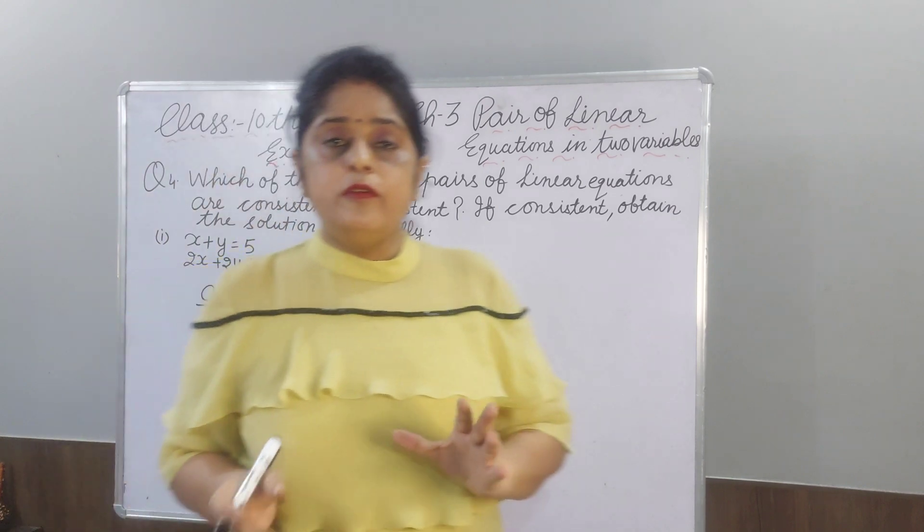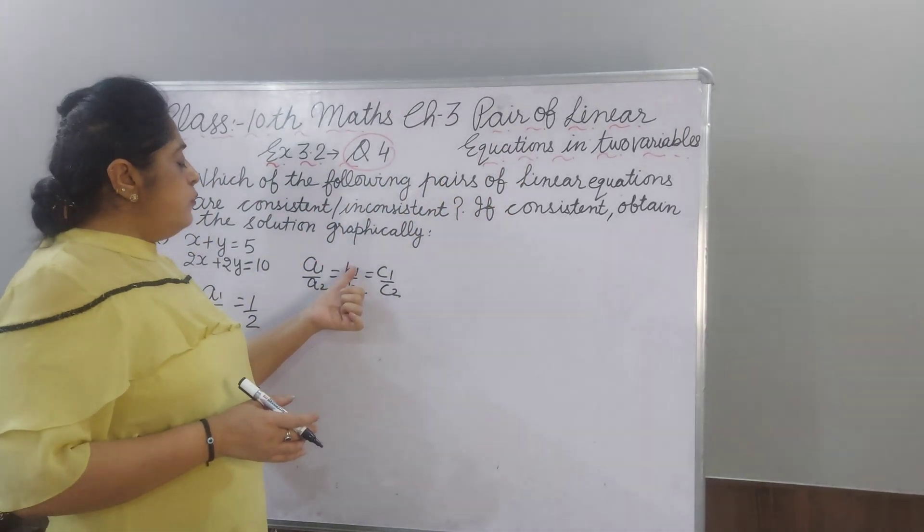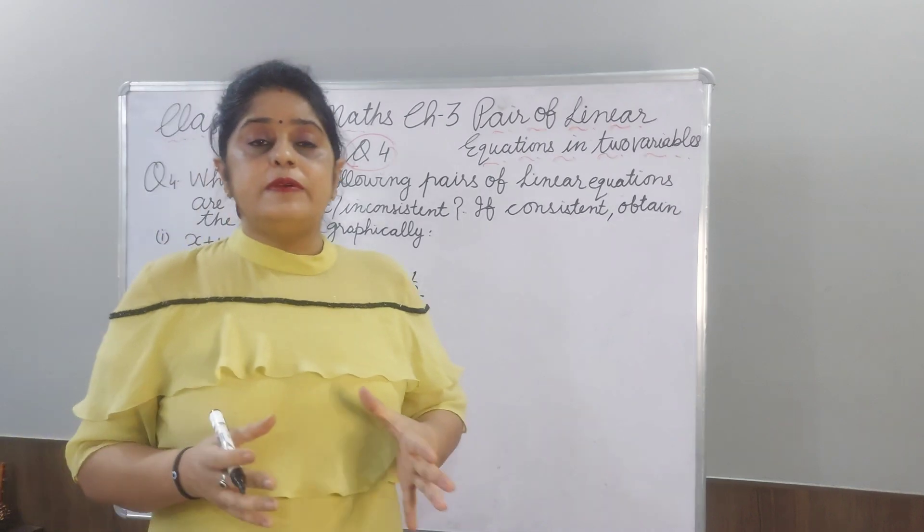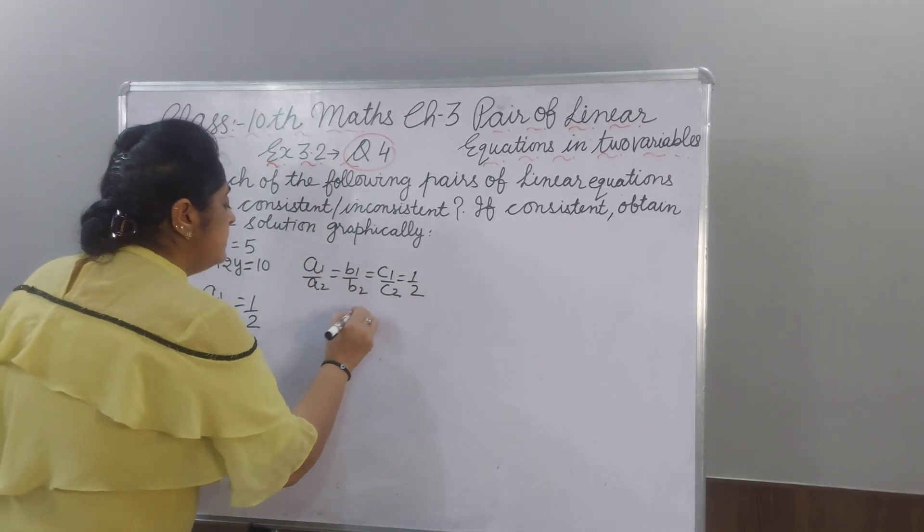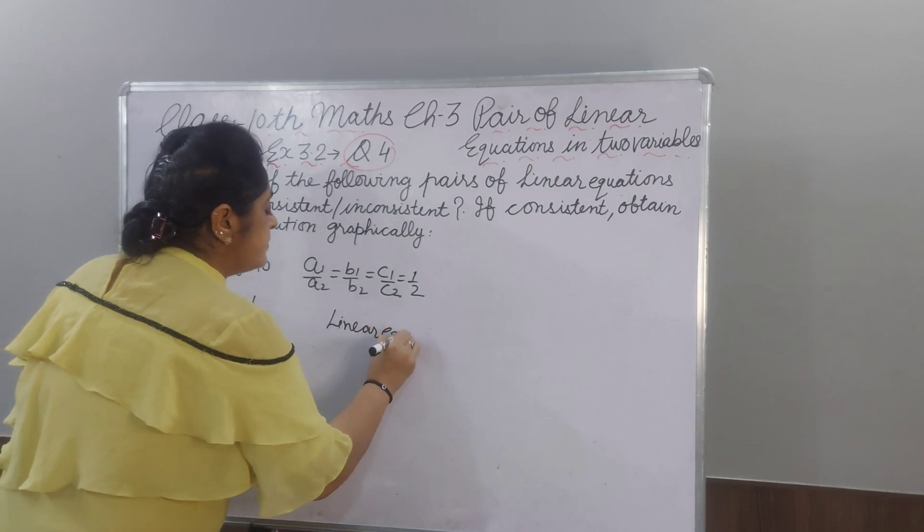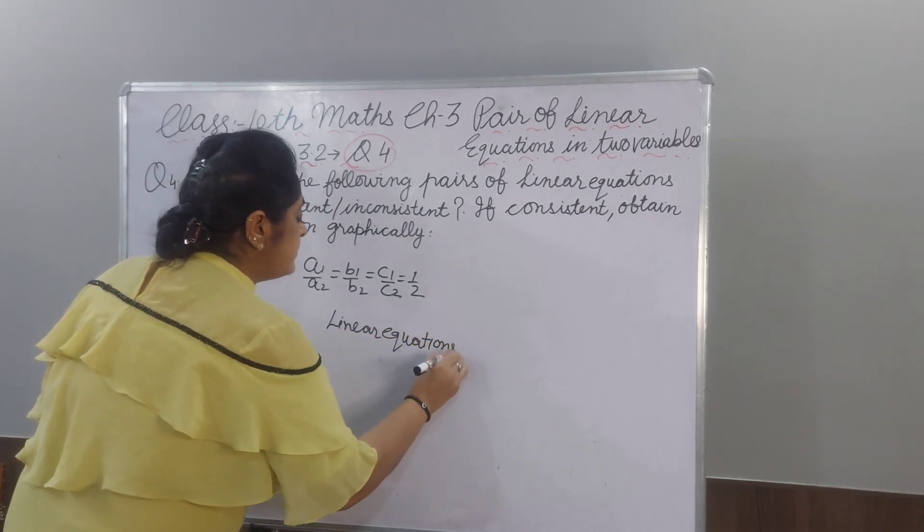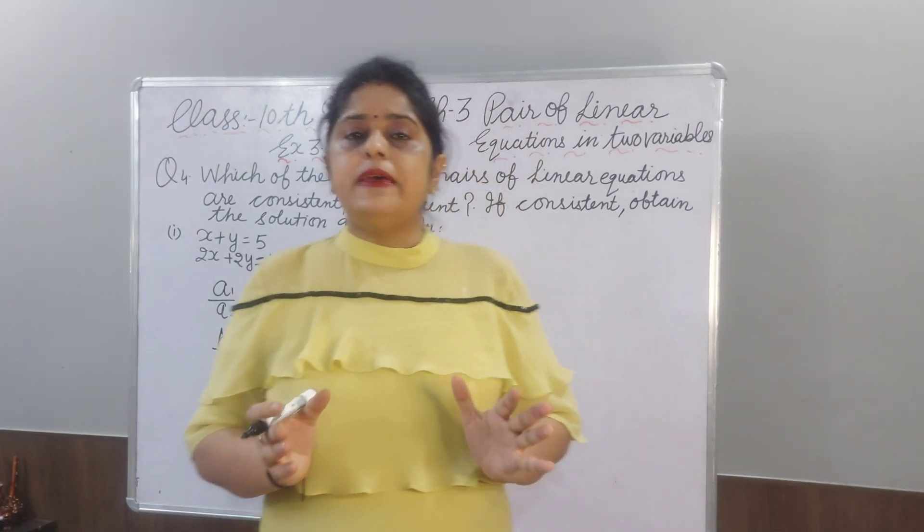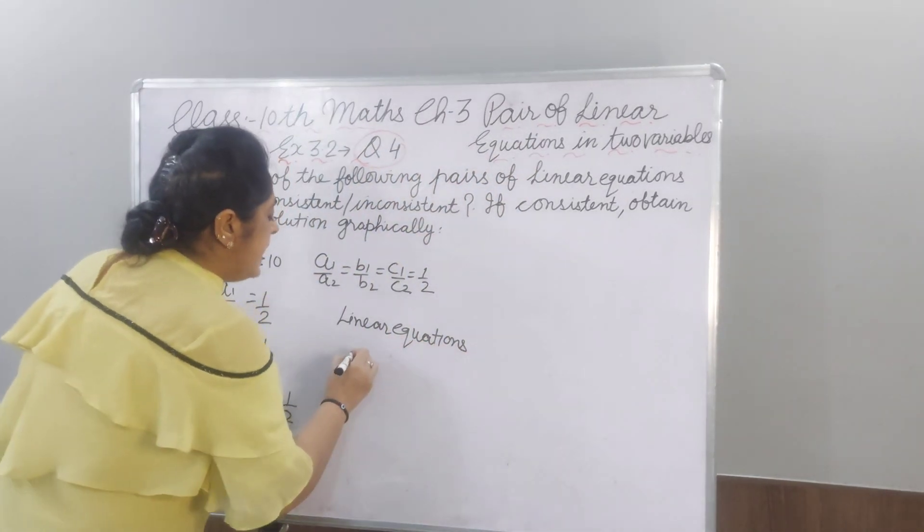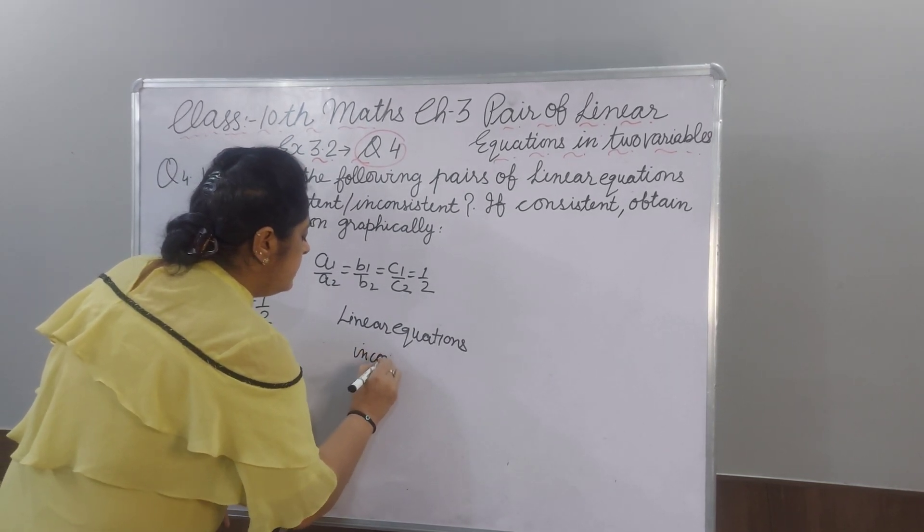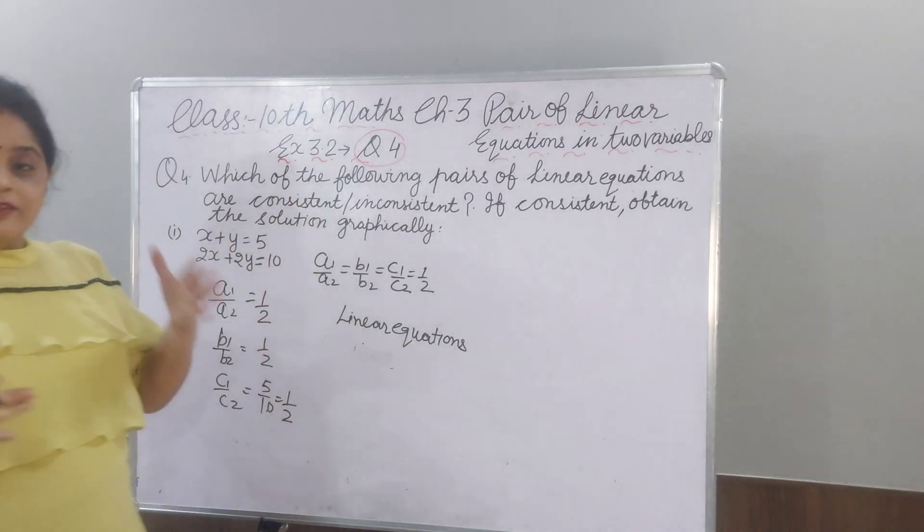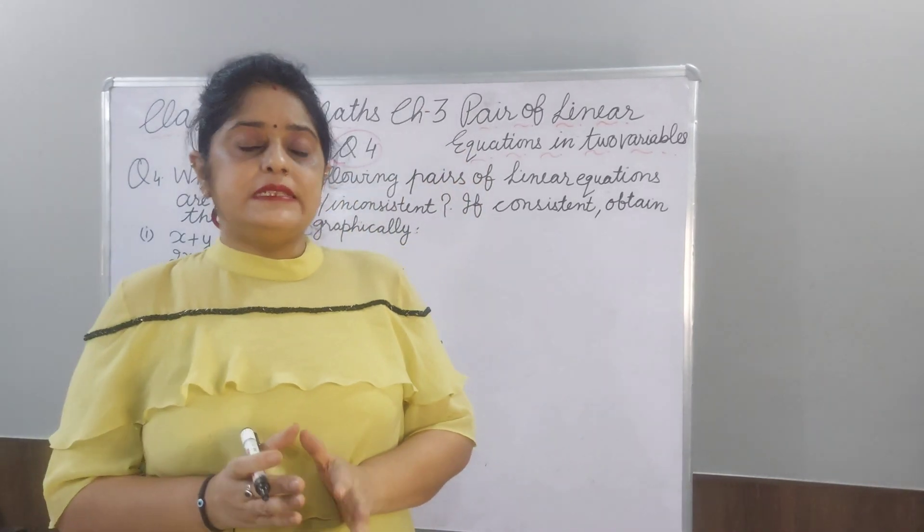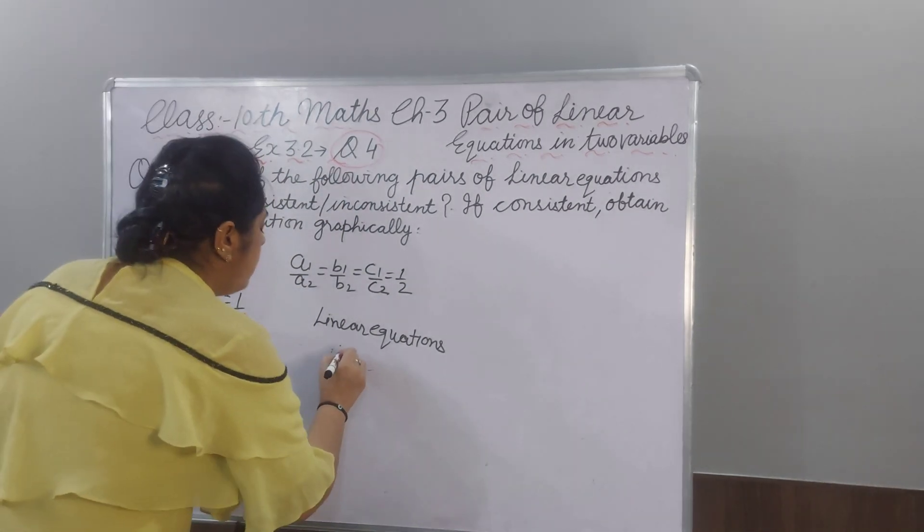All is equal to 1 by 2. We will get the linear equation. If a1 by a2 is equal to b1 by b2 and c1 by c2, all are equal, then we get the linear equation, coincident line.